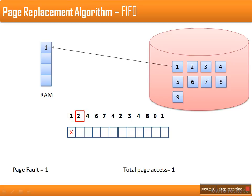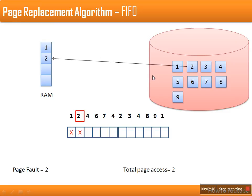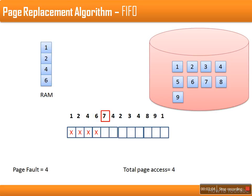Now the second page is required. This page is also not available in RAM, so it also results in a page fault. We have now completed two page references, both resulting in two page faults. The same process repeats for the next page — it is also not available in RAM, results in a page fault, and is loaded into memory. Next, page 7 is required and is also not available in RAM, resulting in another page fault.